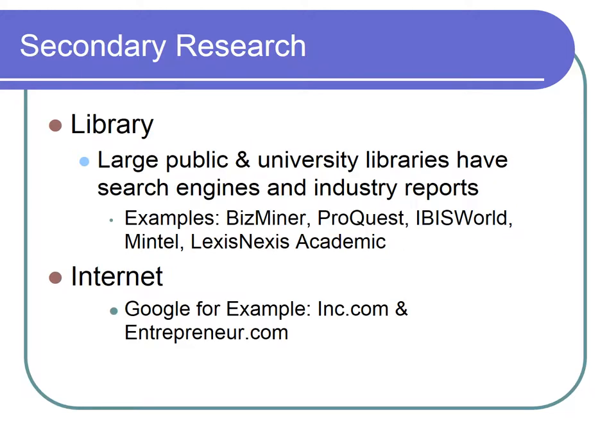You can also do secondary research in libraries — university libraries and large public libraries — with different kinds of industry reports and resources they give you access to, or online through the Internet. Be careful that you're not paying for advertising without getting a good return. Sites like Inc. Magazine and Entrepreneur Magazine are good places to explore what's out there in certain areas.